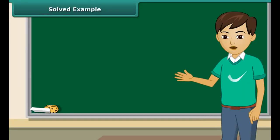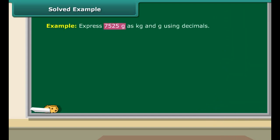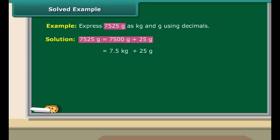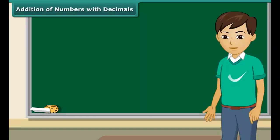Now let us convert a weight expressed in grams into kilograms using decimals. Express 7525 grams as kilograms using decimals. 7525 grams are equal to 7500 grams plus 25 grams, which is the same as 7.5 kilograms plus 25 grams. This can be expressed as 7.5 kg plus 25 upon 1000 kg. Therefore, 7525 grams are equal to 7.525 kg.